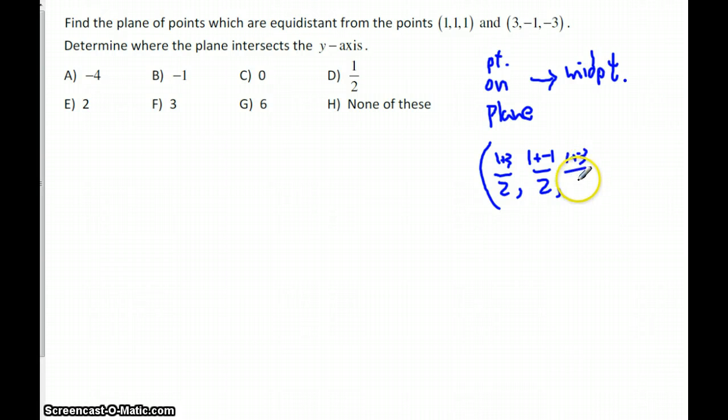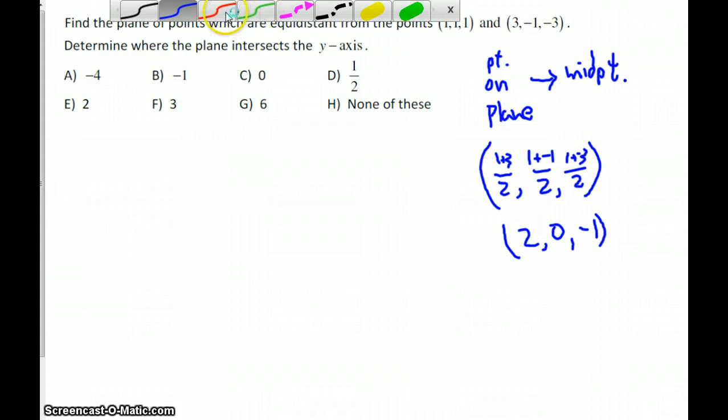So what that gives you is the point 2, because that's 4 over 2, 0 because the 0 from the numerator, and a negative 1, negative 2 in the numerator. Alright, so that's our point. Let's just file that away. That is the point that we would use in our equation of the plane.